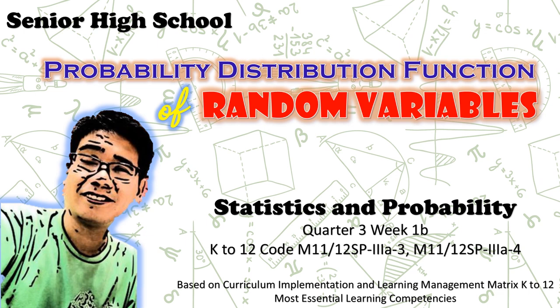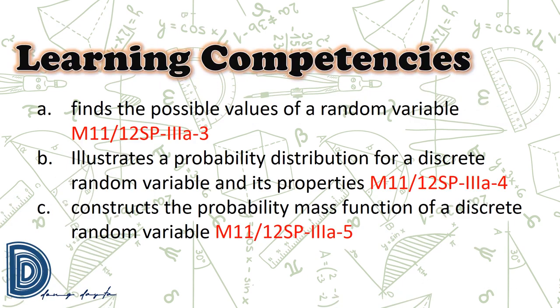Welcome to senior high school mathematics. Let us have the probability distribution function of random variables, under statistics and probability, quarter three, week one, based on the curriculum implementation and learning management matrix for K-12's most essential learning competencies. Our learning competencies are: find the possible values of a random variable; illustrate a probability distribution for a discrete random variable and its properties; and construct the probability mass function of a discrete random variable.